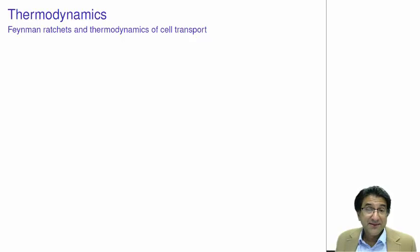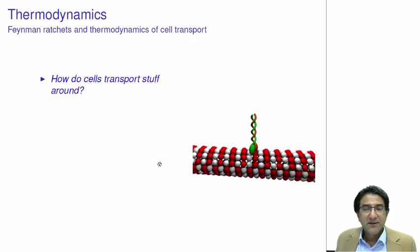Cells are bloody amazing things. They are really quite complicated and minuscule machines. For example, things in the cell can be made to move around from one place to the other. How do cells transport stuff around? Well, there's many ways of doing that.